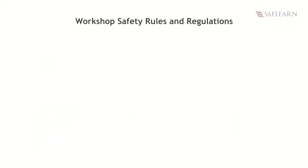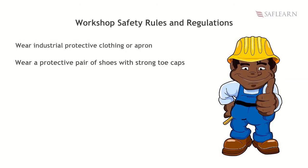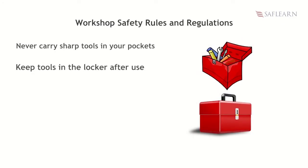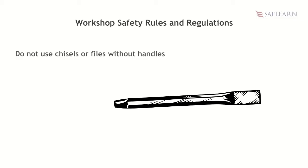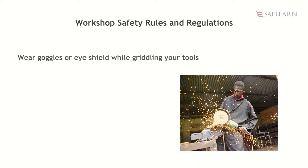In addition to using safety devices, always remember these safety rules and regulations. Wear industrial protective clothing or aprons. Wear a protective pair of shoes with strong toe caps. Never carry sharp tools in your pockets — put them on a tool rack. Keep tools in the locker after use. Do not use chisels or files without handles. Wear goggles or eye shield while grinding your tools.